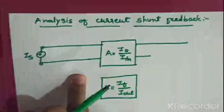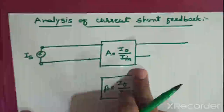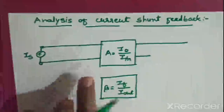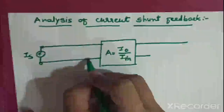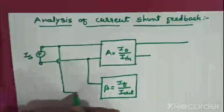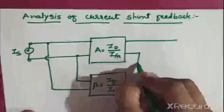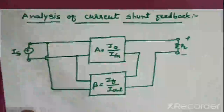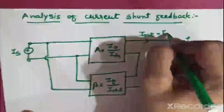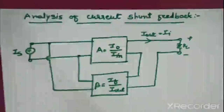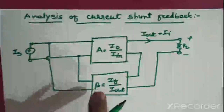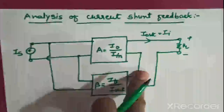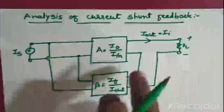Since the feedback network is in shunt with the amplifier on the input side, the input impedance is reduced. The output impedance increases because the feedback network is in series with the output. So on the input side the feedback signal is in shunt, and on the output side it is in series. This completes the block diagram of current shunt feedback.